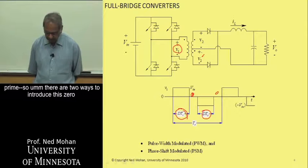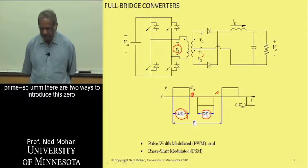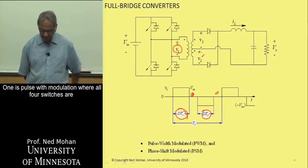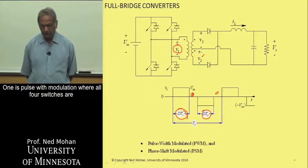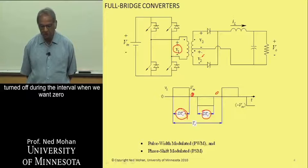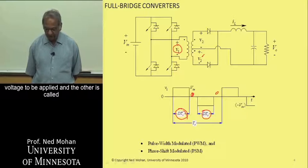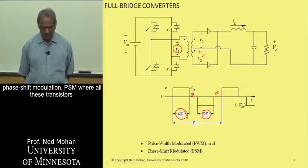So there are two ways to introduce this zero interval in this voltage V1 that gets applied. One is pulse width modulation, where all four switches are turned off during the interval when we want zero voltage to be applied. And the other is called phase shift modulation, PSM.